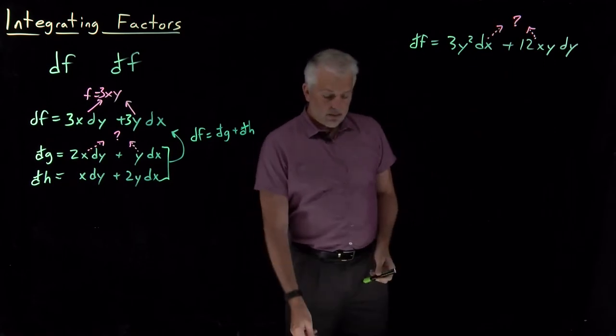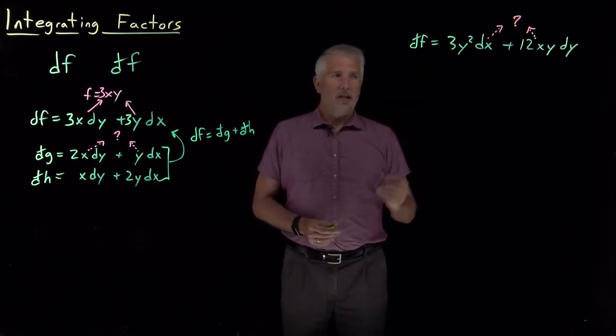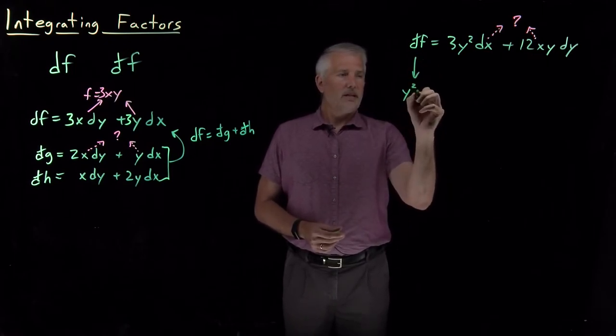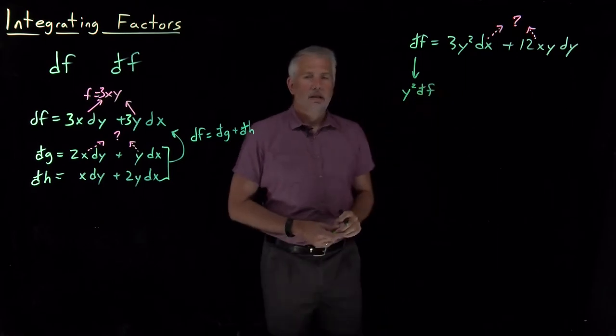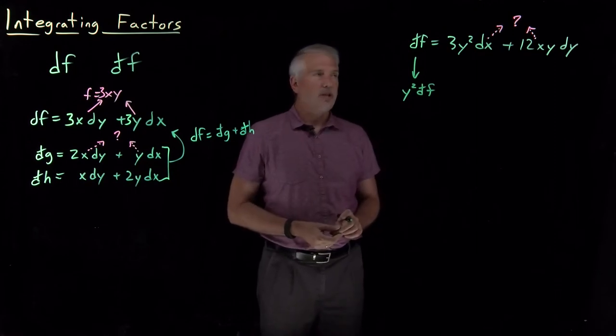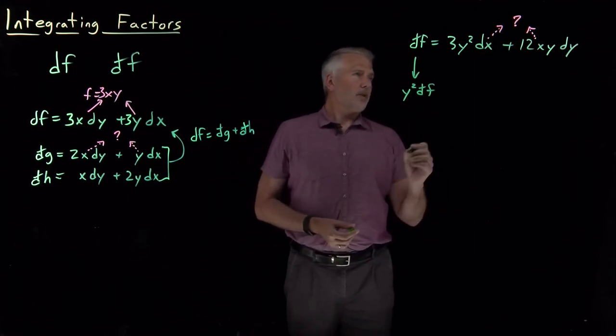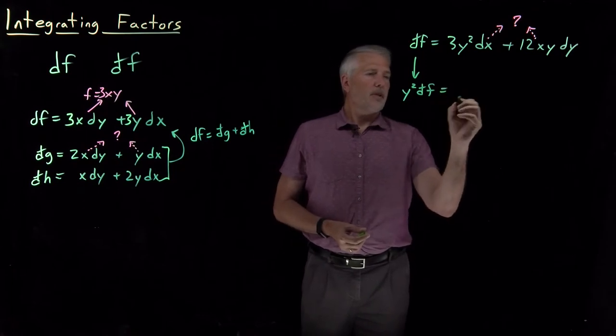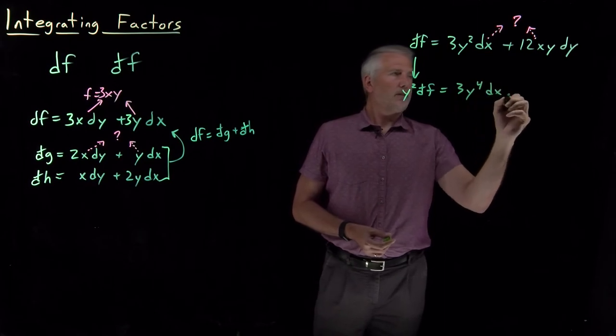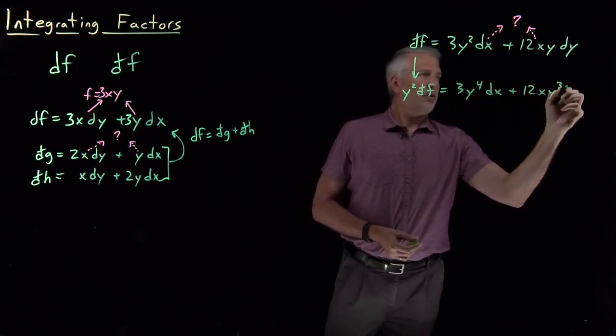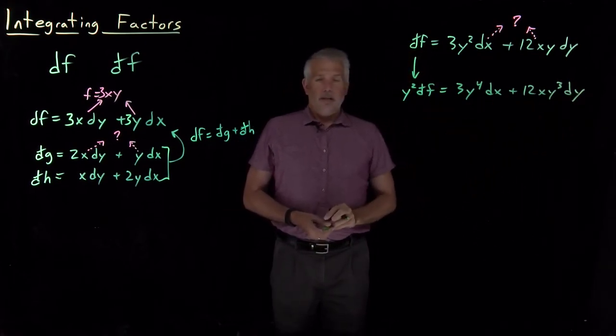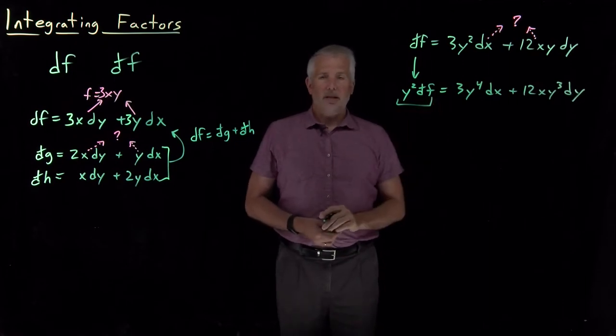You can't find a function for which this is the exact differential. But sometimes we can tweak that inexact differential and turn it into an exact differential. So let's say I take that inexact differential d bar f. Let's say I just multiply it by y squared. So I've got 3y to the 4th dx plus 12xy cubed dy. Yes, that's what I want to do.